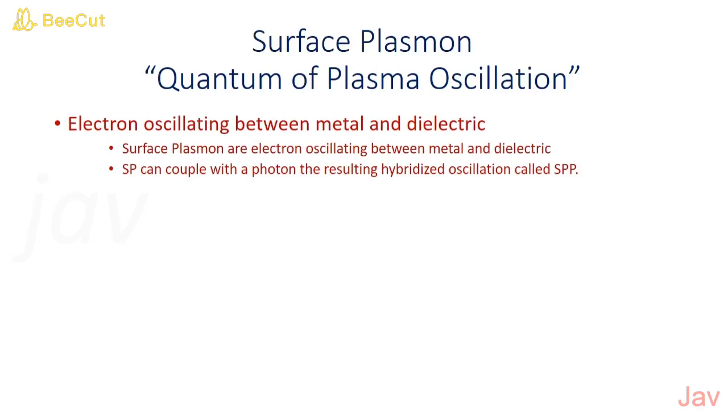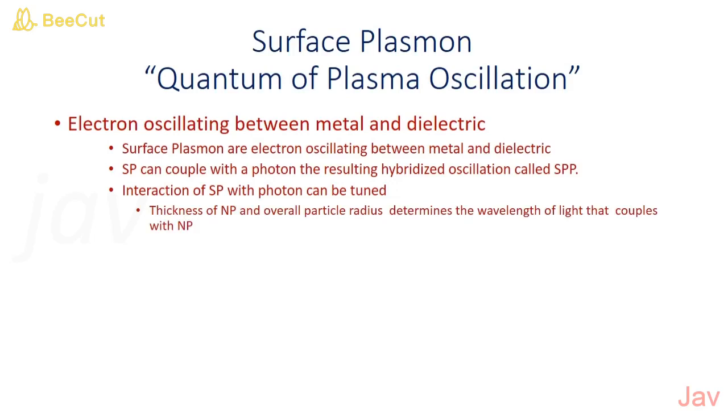The thickness of the nanoparticle and overall particle radius determine the wavelength to which the nanoparticle couples. The surface plasmon control the light that couples with it. When exposed to light comparable with the wavelength of the surface plasmon, they interact with light, and size of the particle determines its color.